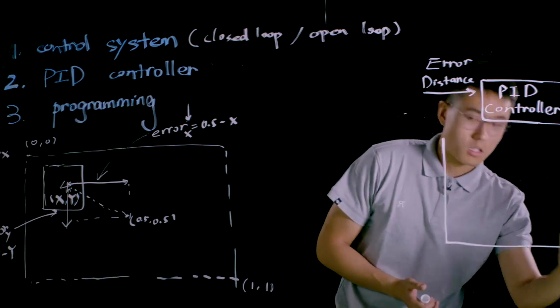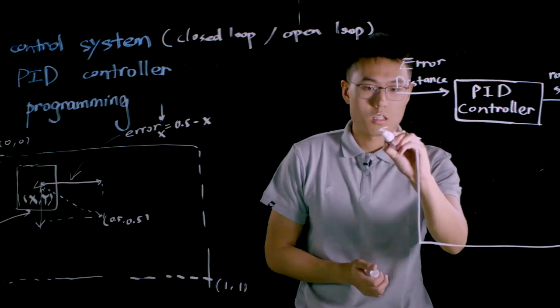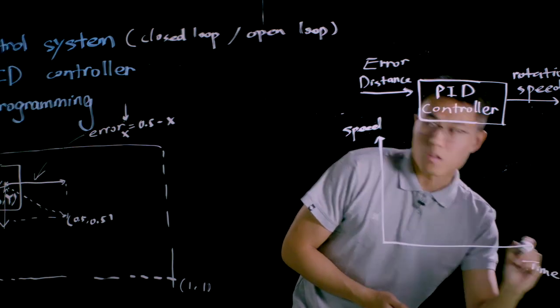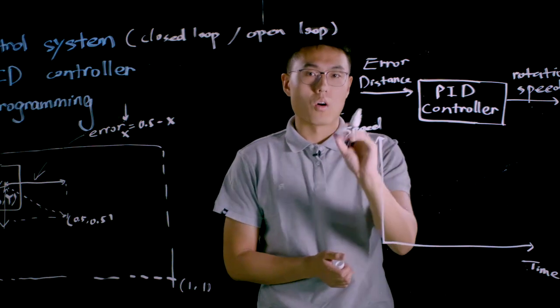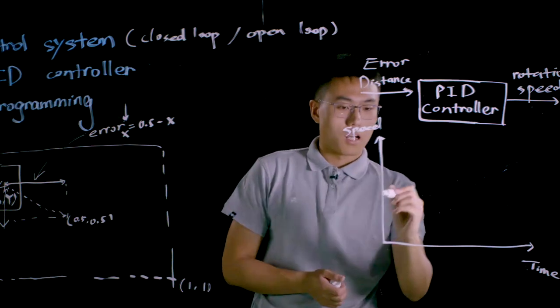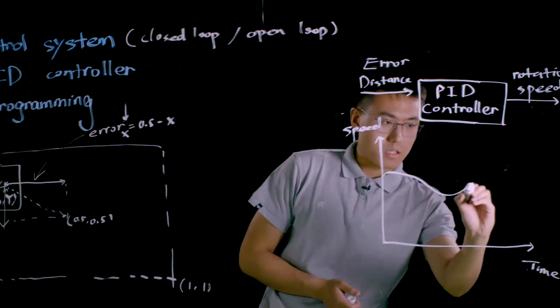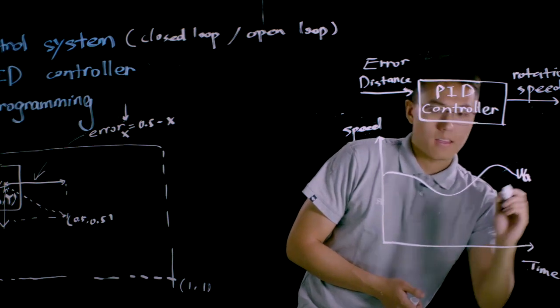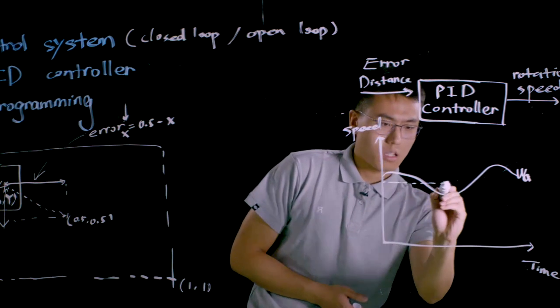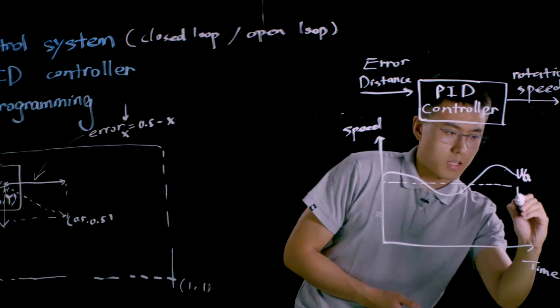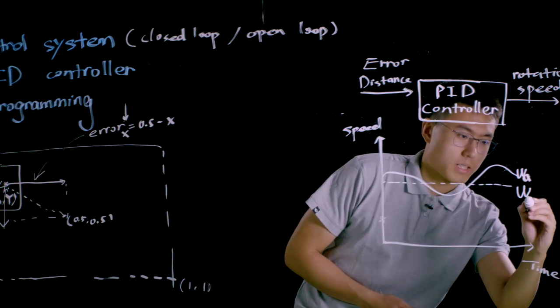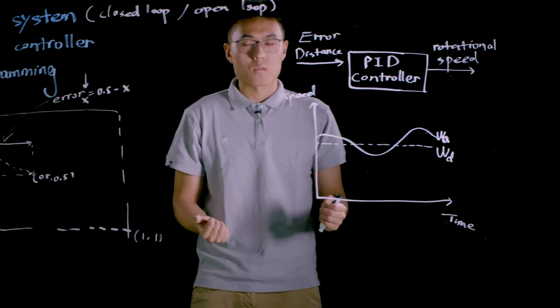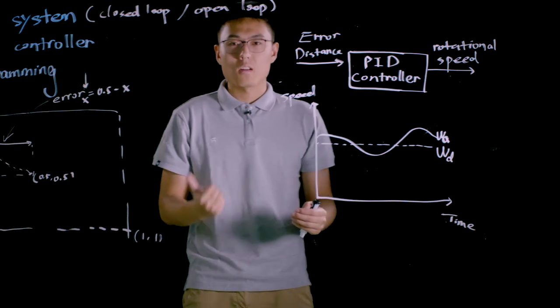So first of all we need to draw a graph of speed versus time. So this speed is actually the rotational speed of the motor on yaw axis. I'll use solid omega to represent the actual speed omega A. And I'll use dash omega to represent the target speed or desired speed omega D. PID controller can calculate three different outputs: P out, I out, and D out. Let's take a look at the P out first.